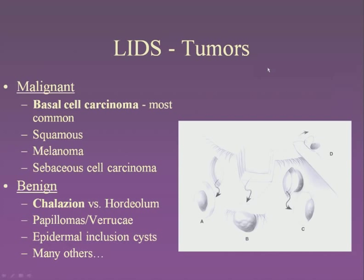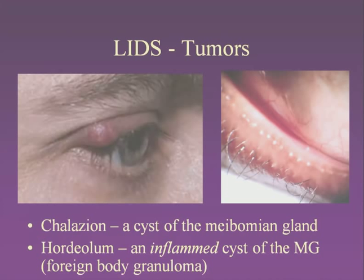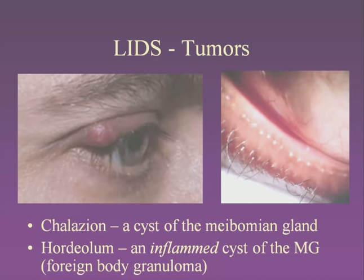There are many tumors found on the eyelids, but the most common malignant tumor is basal cell carcinoma. The most common benign tumor is the chalazion, which is basically a foreign body reaction. When a meibomian gland becomes plugged up, the waxy holocrine secretions rupture beyond their usual boundaries and cause a foreign body reaction where you can see giant cells and histiocytes — the typical granulomatous inflammation.